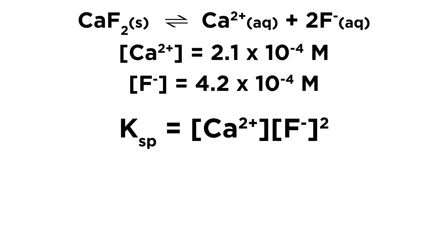Now let's write our Ksp expression. This is just like any other equilibrium expression — it involves only aqueous or gaseous species. So we're going to have the calcium ion concentration times the fluoride ion concentration squared. We don't have to put that over any reactants because the reactant is a solid.